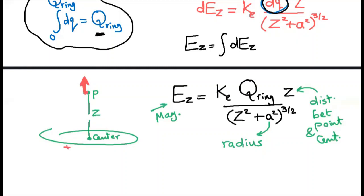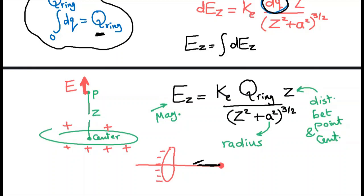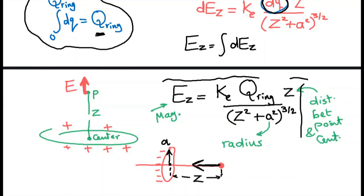If the ring is positively charged, the electric field will be directed away from the ring — out along the axis. If the ring is negatively charged, I calculate the electric field on the axis at a chosen point, and the field will be directed towards the negative ring. I identify Z as the distance between the point and the center of the ring, and A as the radius of the ring, then use the formula to find the magnitude.